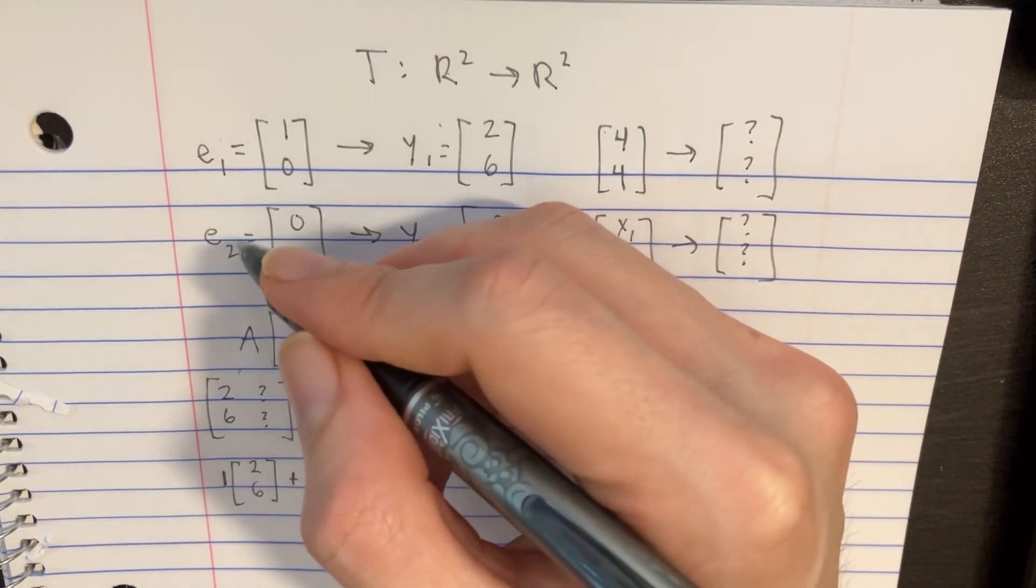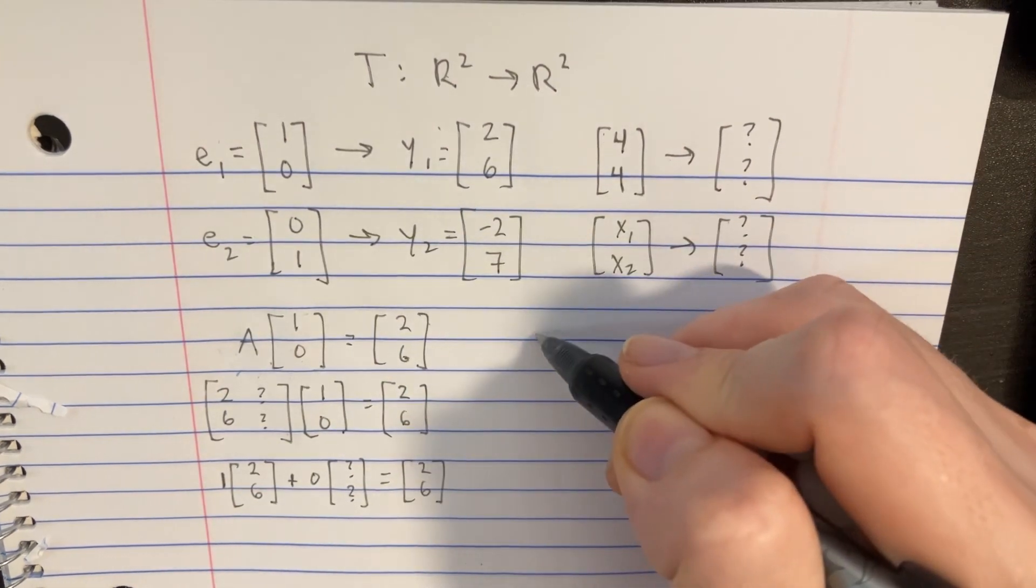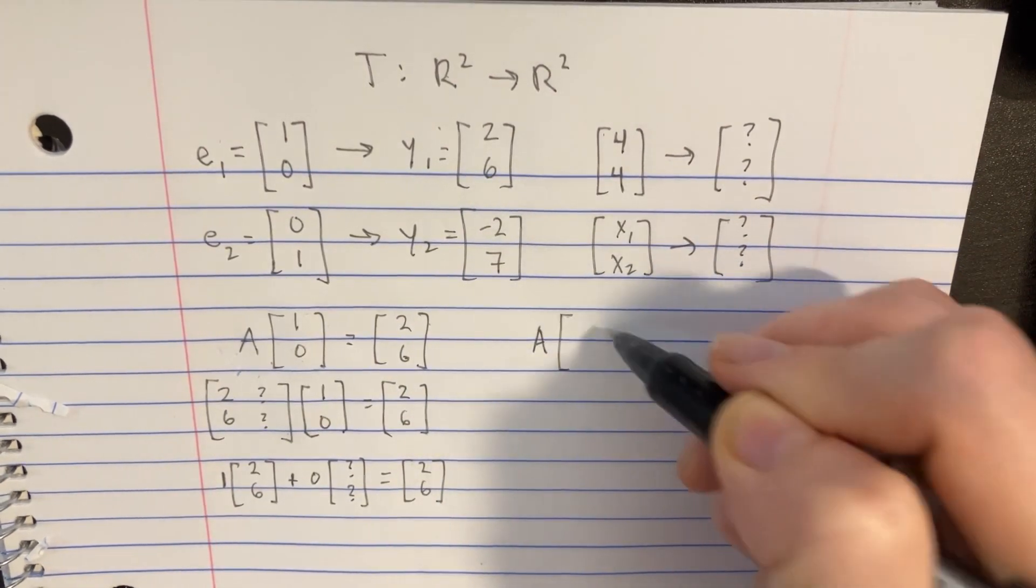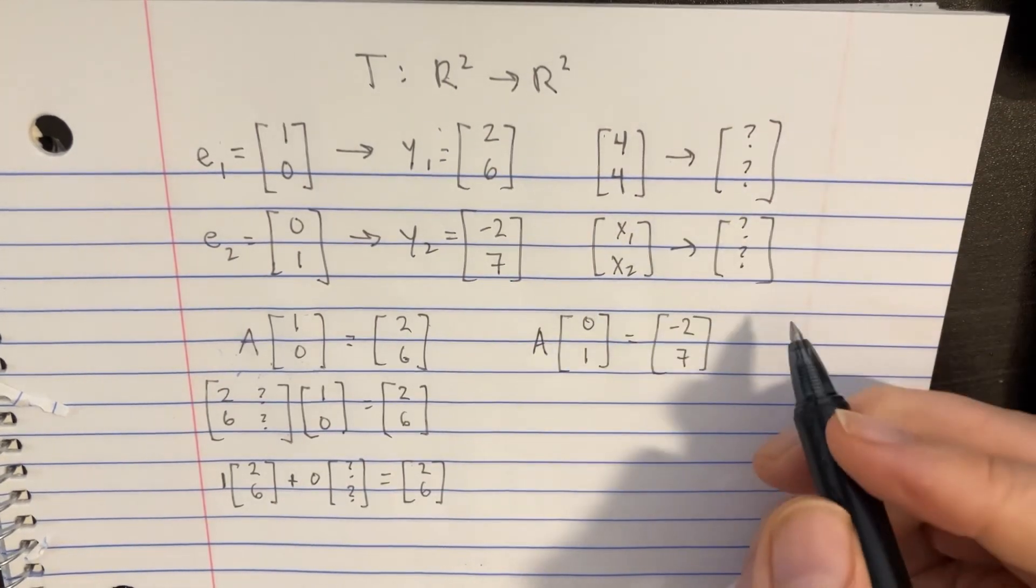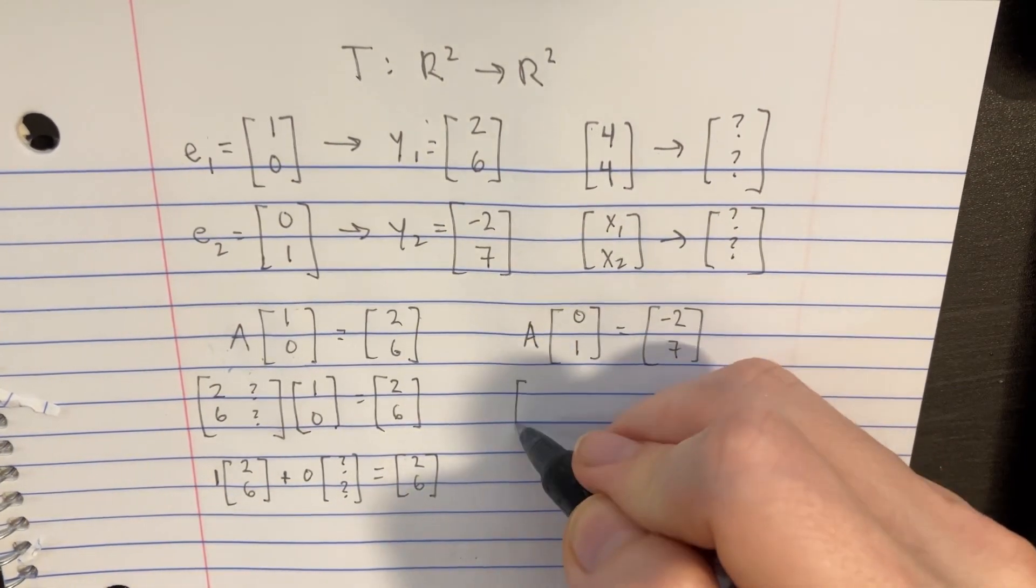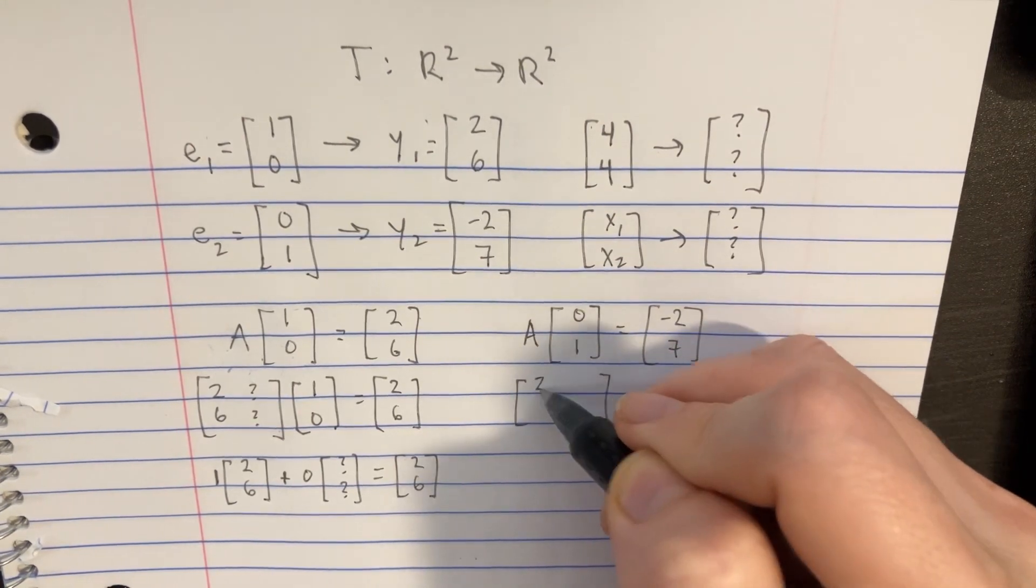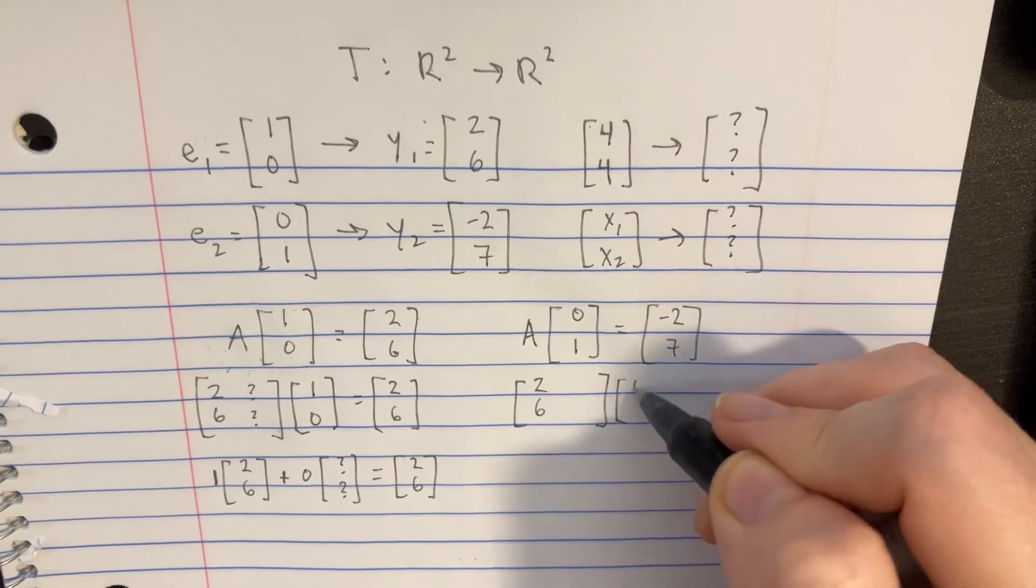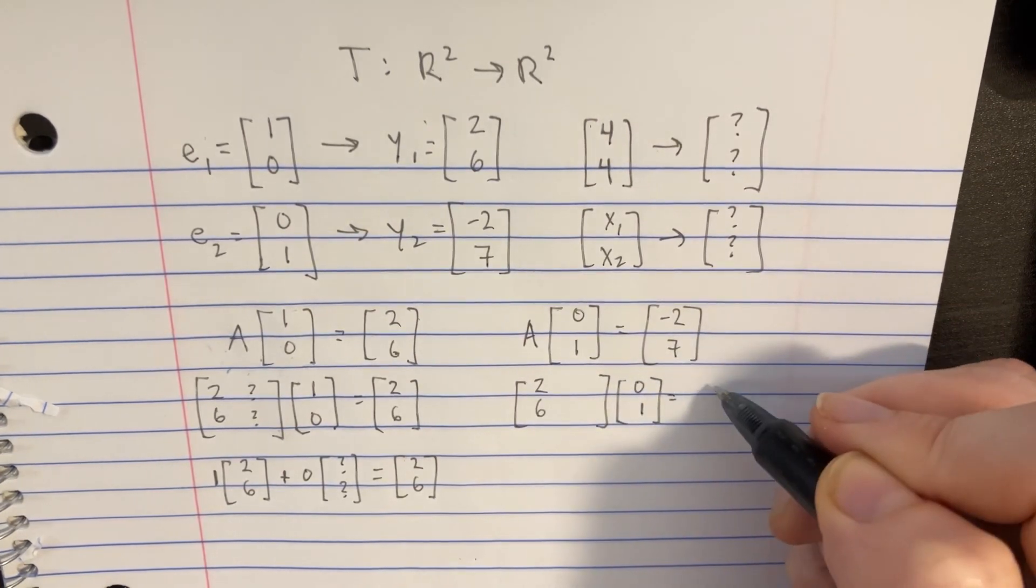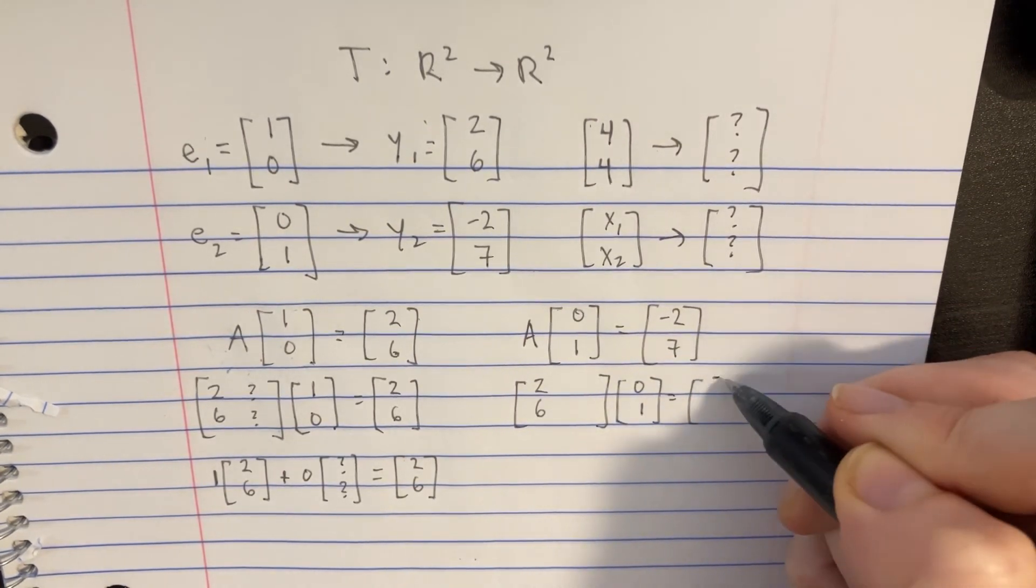Let's try to figure out what the rest of it is by using this one. So we'll set up the same situation. We have A times 0, 1 is supposed to be equal to negative 2, 7. So we can visualize this as the big thing here. We already know this side is 2, 6, so let's just leave that there. But it's going to be multiplied by 0, 1, and that's going to be equal to negative 2, 7.